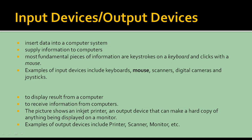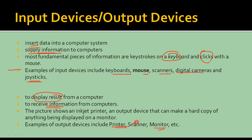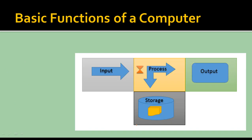Input devices are used to insert data and supply information to the computer. The most commonly used input devices are keyboard, mouse, and microphone. Other input devices include scanners, digital cameras, and joystick. Output devices are used to display the result from the computer or receive information from the computer. Examples include inkjet printer and monitor. Note that a scanner is an input device, not an output device. The basic function of a computer is: input, process, and output. Storage is a bi-directional process.